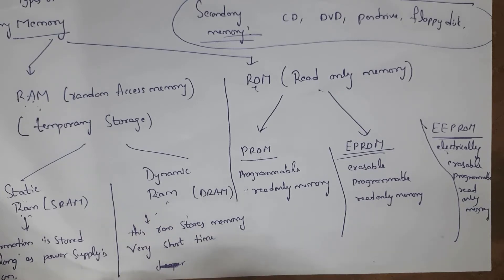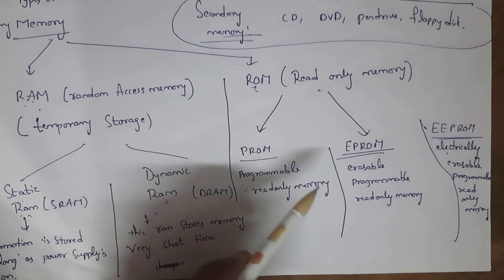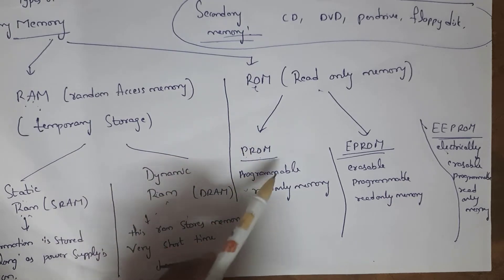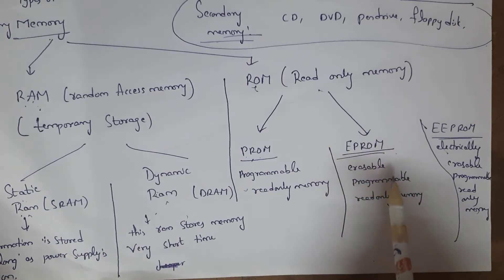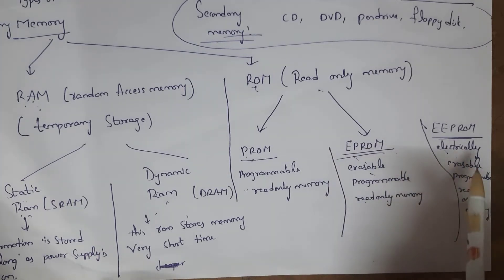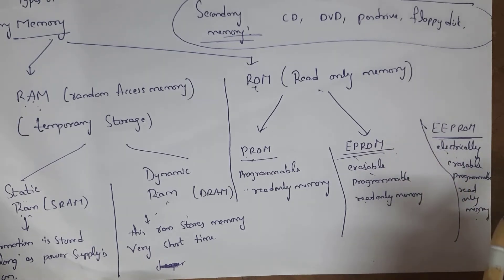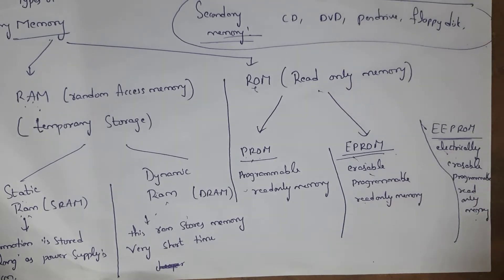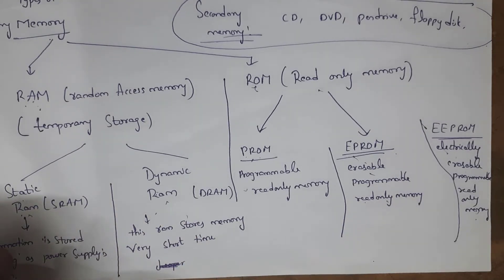ROM stands for Read-Only Memory and is permanent storage — data remains even after the system is shut down. There are three types of ROM. First is PROM (Programmable Read-Only Memory) — once data is copied into PROM, it cannot be deleted. Second is EPROM (Erasable Programmable Read-Only Memory) — data inserted can be deleted and new data can be inserted. Third is EEPROM (Electrically Erasable Programmable Read-Only Memory) — data can be deleted using special electrical waves within milliseconds.